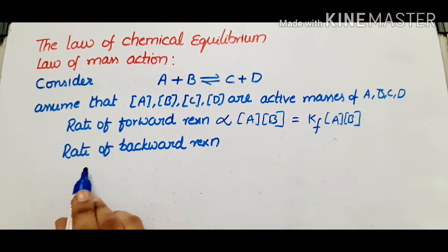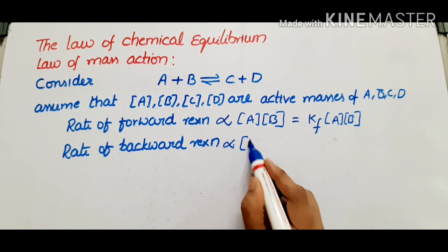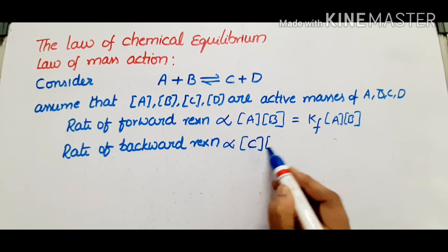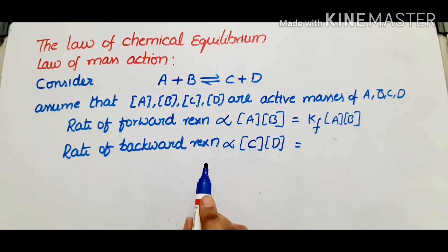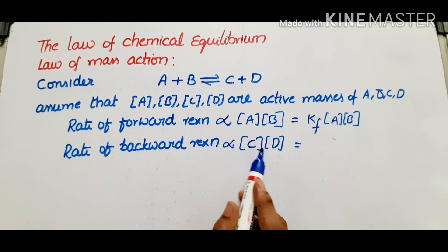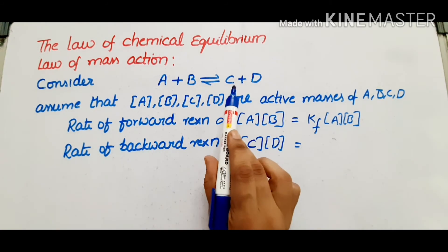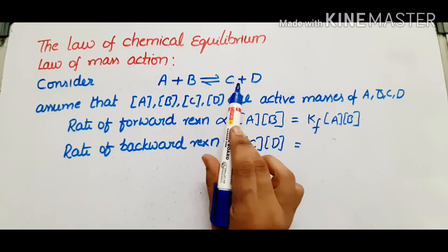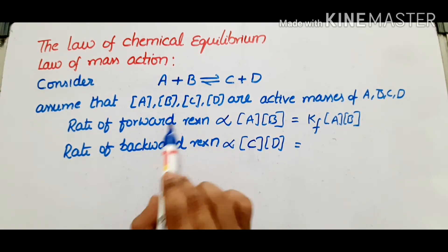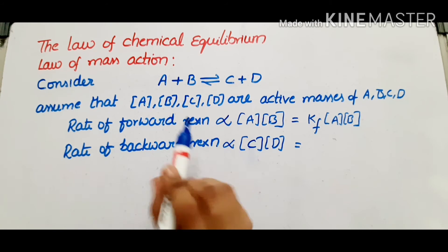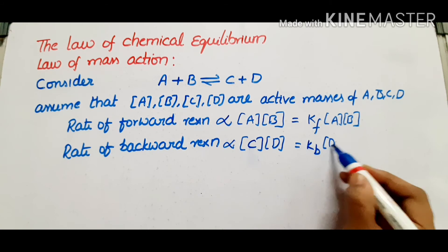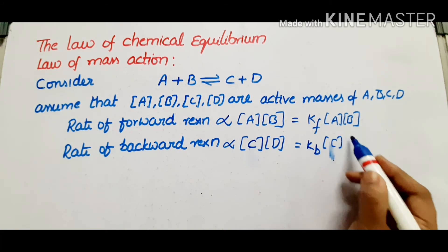In the same way, the rate of backward reaction is directly proportional to the concentrations or active masses of C and D. So the rate of backward reaction is proportional to [C] into [D] concentrations. Introducing the velocity constant Kb, the rate of backward reaction equals Kb into [C] into [D].